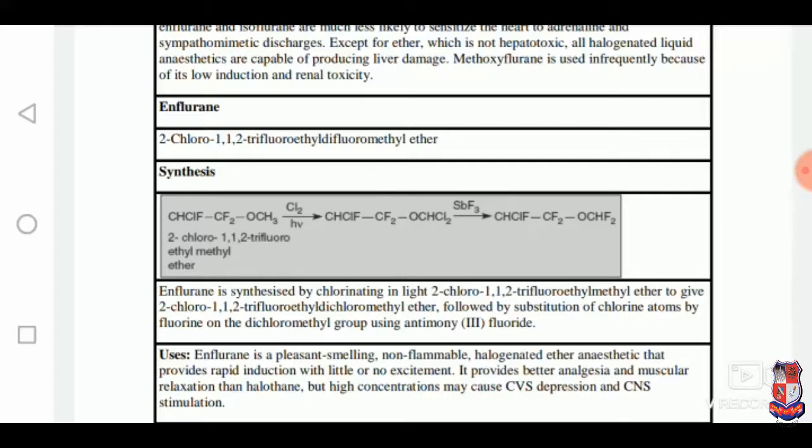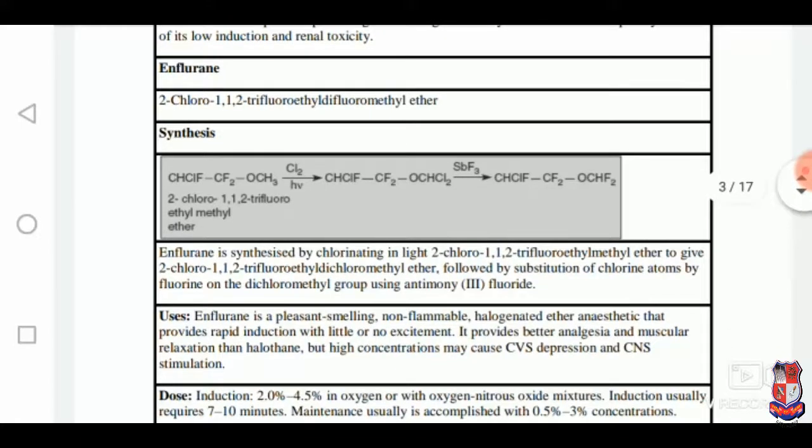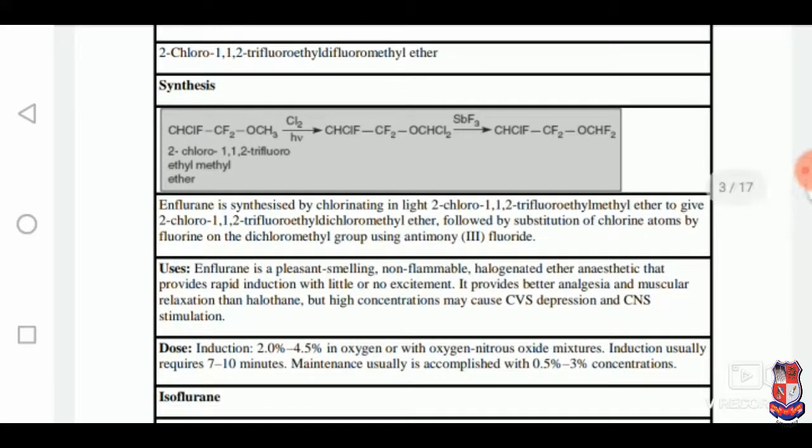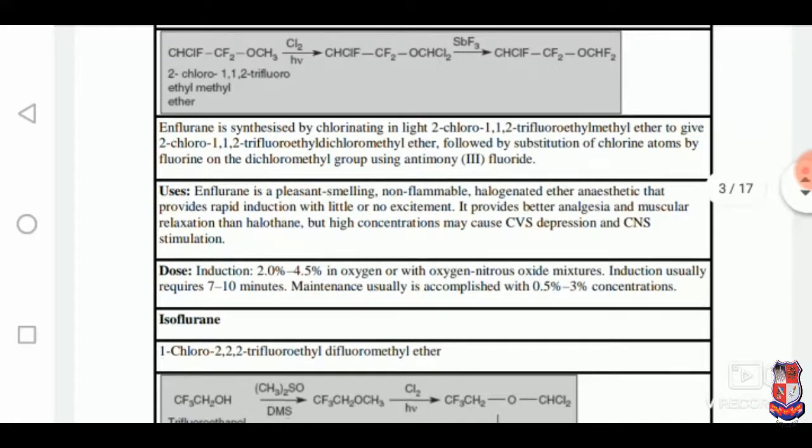Enflurane: IUPAC nomenclature is 2-chloro-1,1,2-trifluoroethyl difluoromethyl ether. Synthesis: 2-chloro-1,1,2-trifluoroethyl methyl ether undergoes a free radical reaction to produce the intermediate, and in the presence of antimony fluoride it will produce our compound, enflurane.